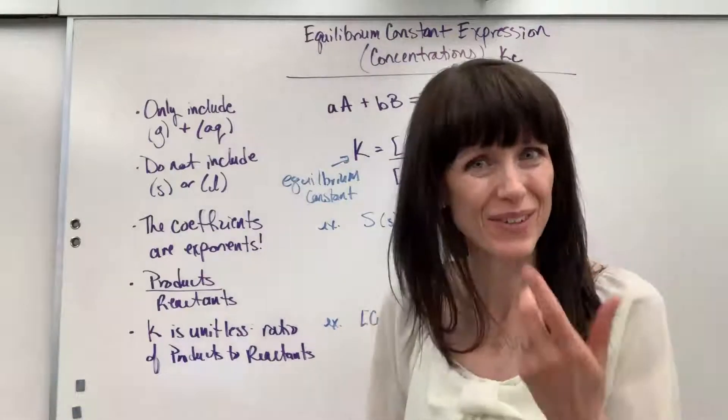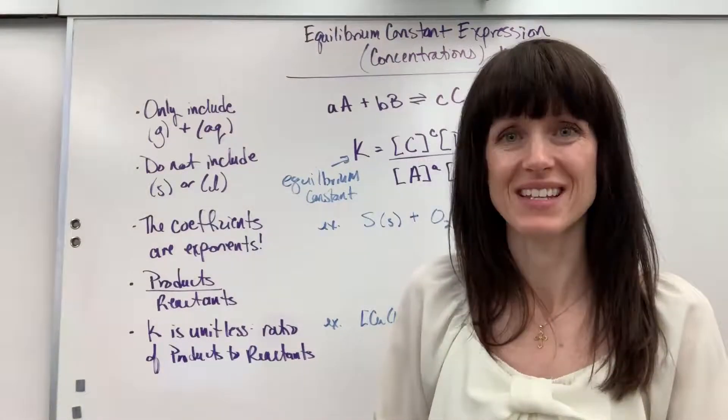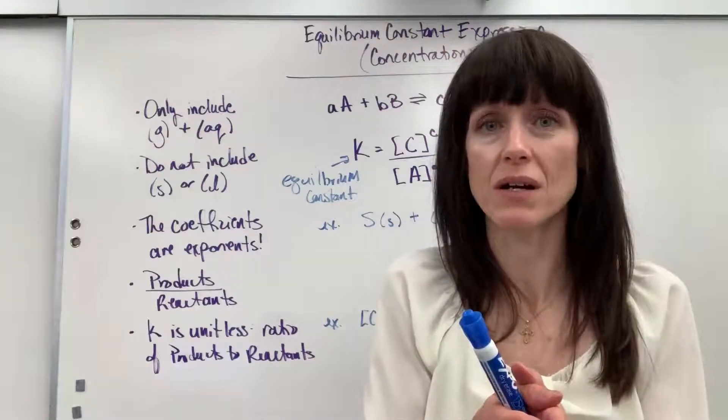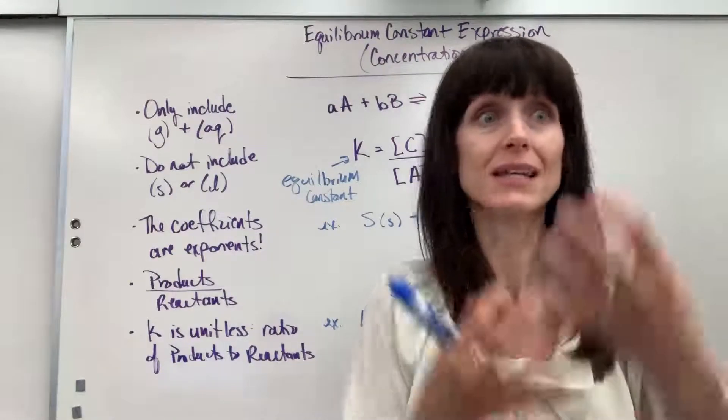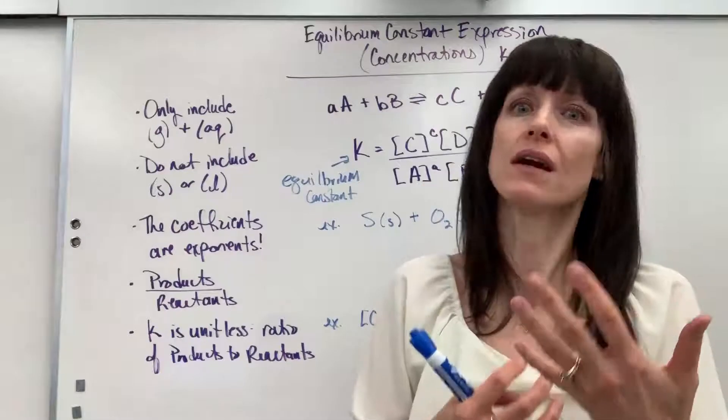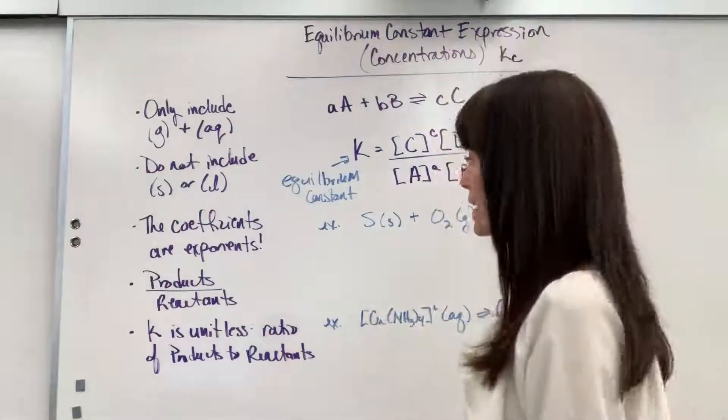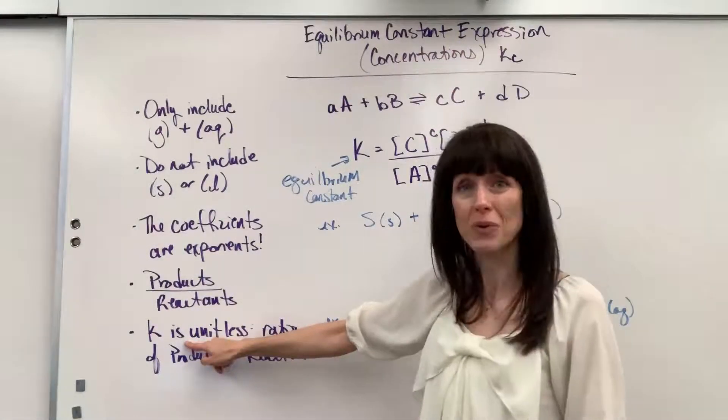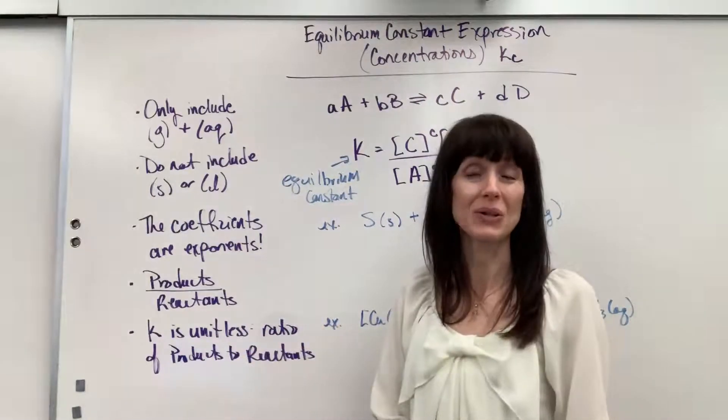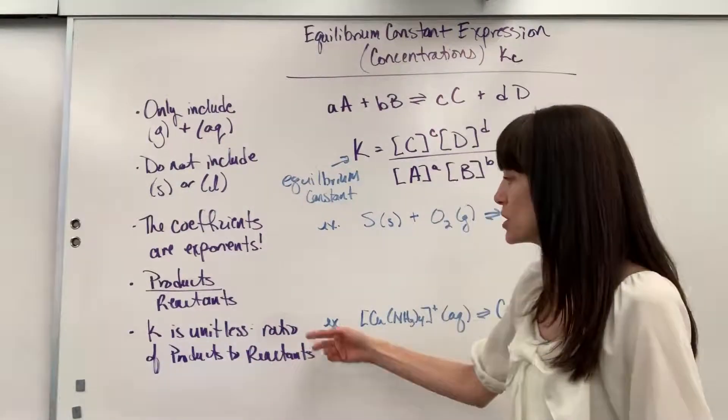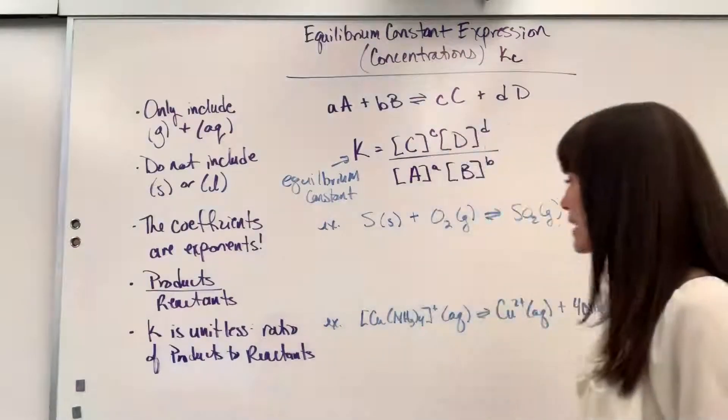Again, to contrast that with lowercase k, the rate constant, really, honestly, the number one purpose of the rate constant is to adjust units. It's what it carries. The mantle that it carries is adjusting units. And then here, capital K, the equilibrium constant, unitless, no units. It's only a value. It simply shows us the ratio of products to reactants.